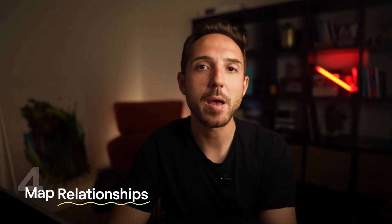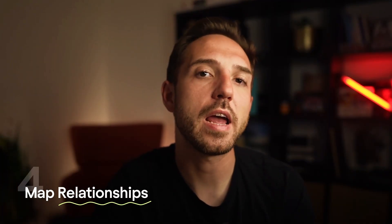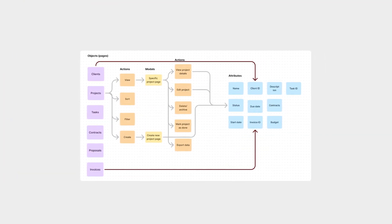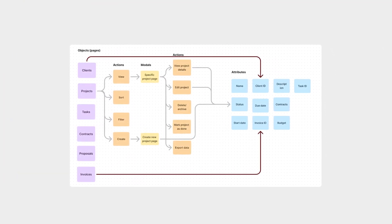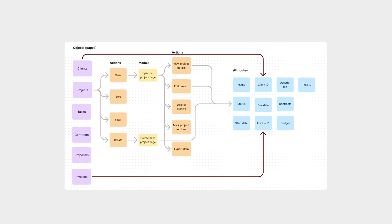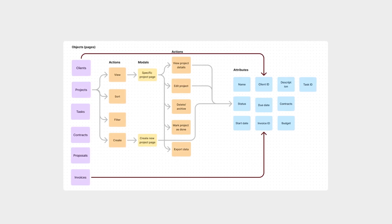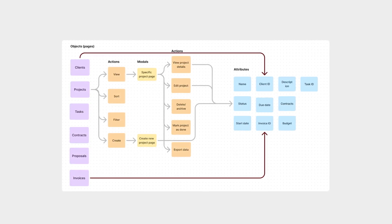Step 4: Map relationships. This is the part where everything connects. How does one object relate to another? Like, a project connects to tasks, clients, and invoices. So if I'm on a project page, I should be able to jump to a related invoice. These connections are what turn your app from a series of pages into a seamless experience. Draw lines, use arrows — whatever works. Just make sure you're visualizing how data and actions flow across the product.